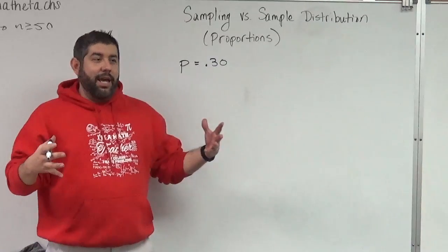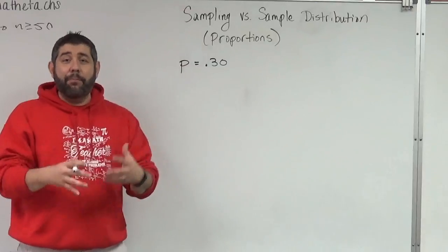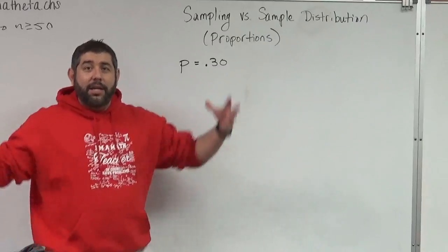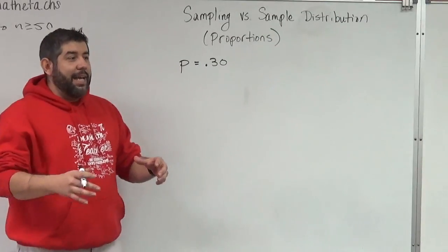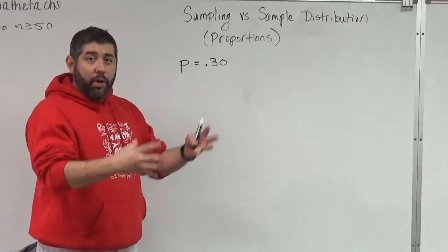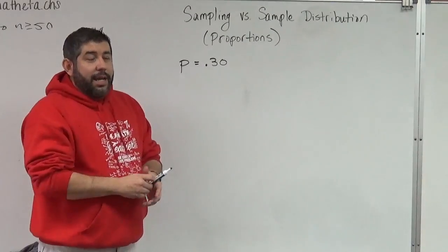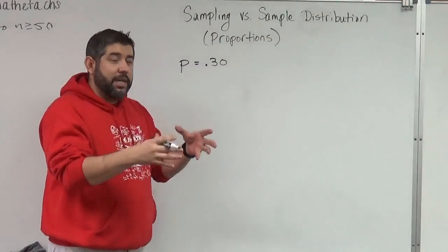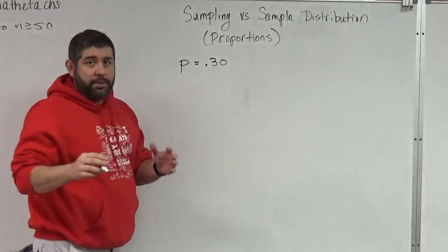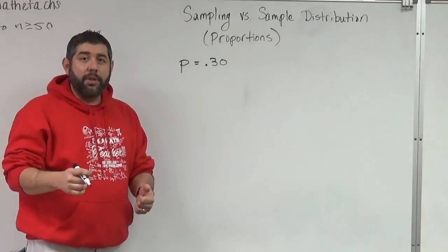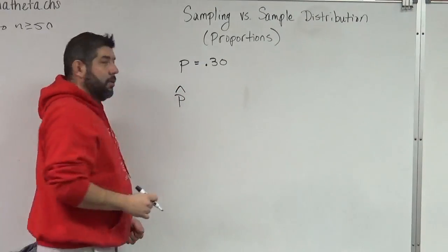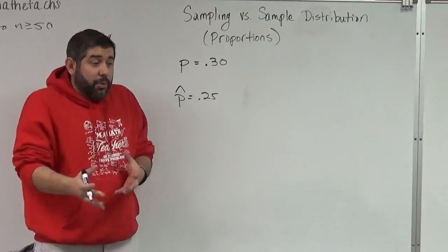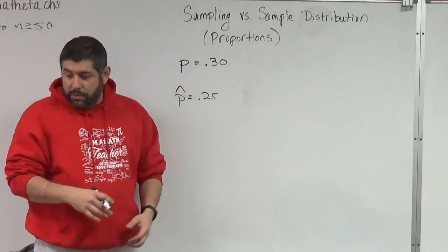I can't go take a census of every person, so what I'm going to do is take a sample of 100 people and see what percentage are awesome. I go through — that person's awesome, that person's awesome — they're either awesome or not. I find out that 25% of those 100 people are awesome. So our sample proportion, which we call P-hat, is 0.25.